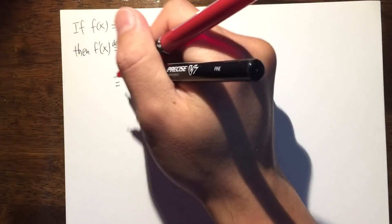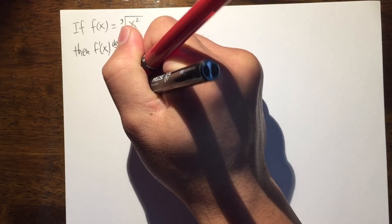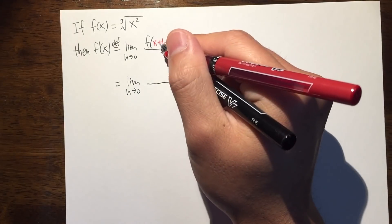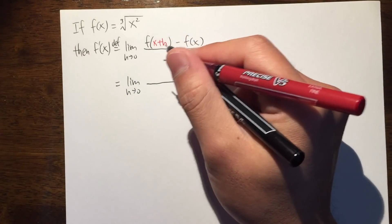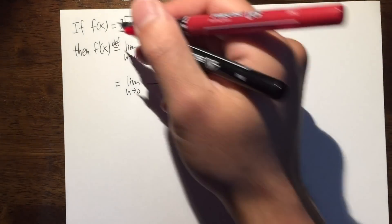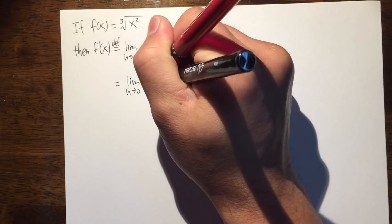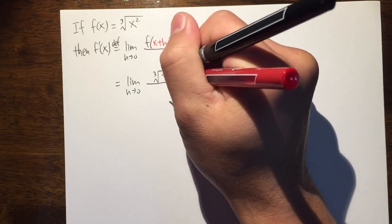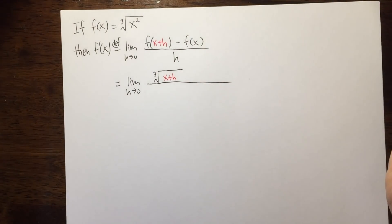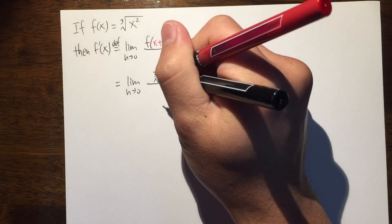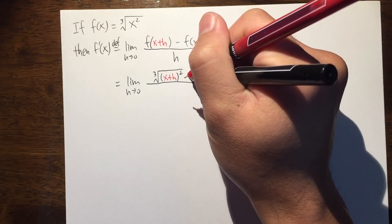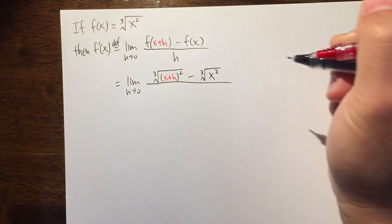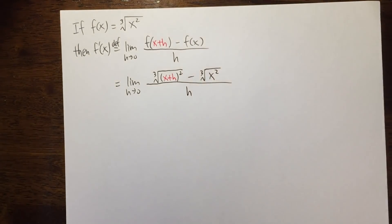Now let's go ahead and set this up. Let's write down the limit as h goes to 0, and then for the top right here, f of x plus h — we just have to plug in x plus h into this x. So we have the cube root of x, so I will put this down in red: the x plus h, and then we will have to put this in parentheses and square that. And we will minus f of x, which is just the cube root of x squared. And of course, on the bottom, we still write down the h.